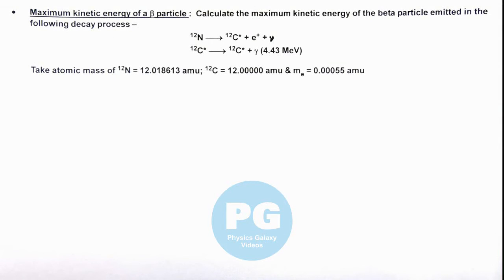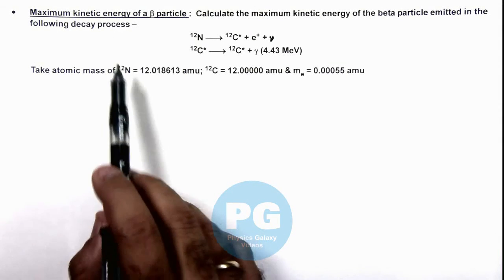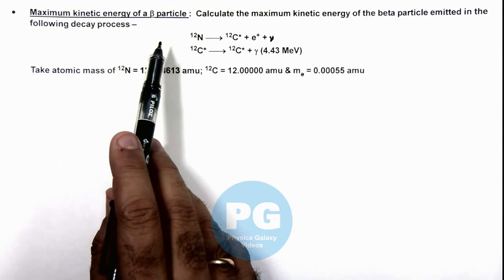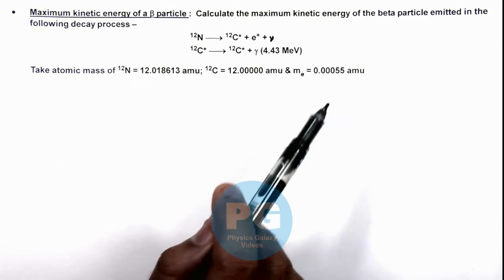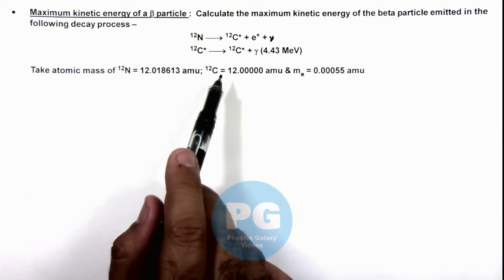In this illustration, we'll analyze the maximum kinetic energy of a beta particle. Here we are required to calculate the maximum energy of the beta particle emitted in this decay process.